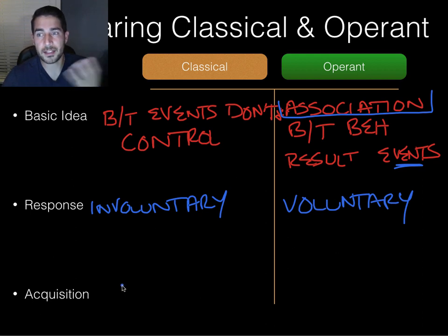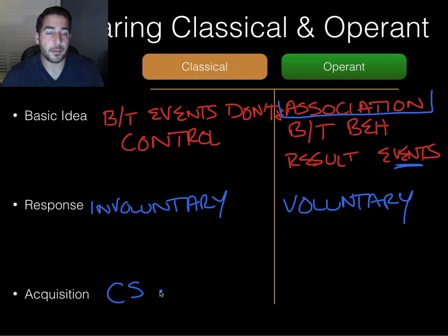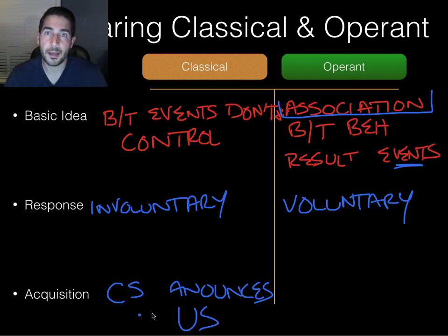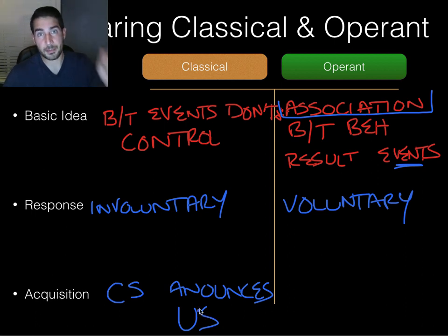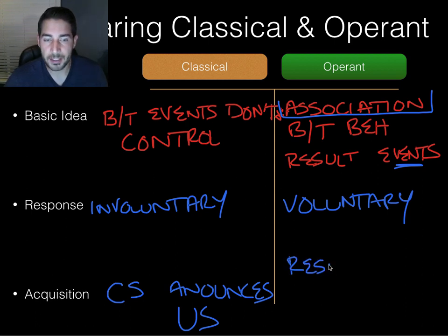Acquisition — how does this association form? With classical conditioning, you associate events where the conditioned stimulus announces the unconditioned stimulus. So the conditioned stimulus, the bell, announces that there's going to be food afterwards. With operant conditioning, you learn to associate the responses with the consequences.